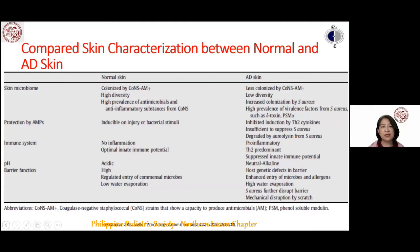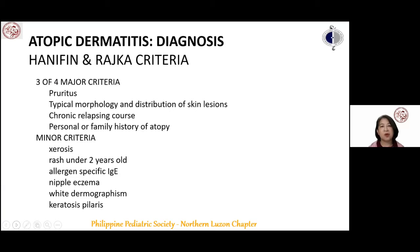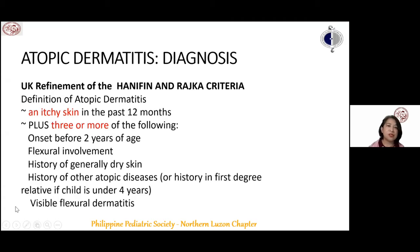For diagnosis, we use the Hanifin and Rajka criteria, requiring three of four major criteria, with pruritus as the quintessential feature. The UK refinement, used internationally for research, requires itchy skin in the past 12 months plus three or more of: onset before two years of age, flexural involvement, history of generally dry skin, history of other atopic diseases, or history in a first-degree relative if the child is under four years, and visible flexural dermatitis.